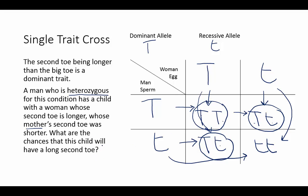So the answer is there is a 75% chance — three out of four boxes — resulting in a long second toe. Had the question asked about the chances of a short second toe, we could only look at the box with two recessive alleles. Two small t's is the only case where the child would have a short second toe.